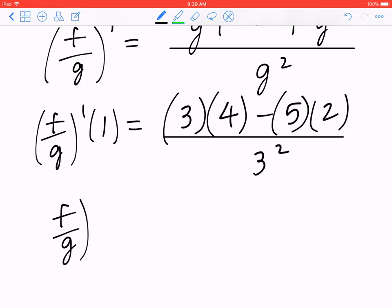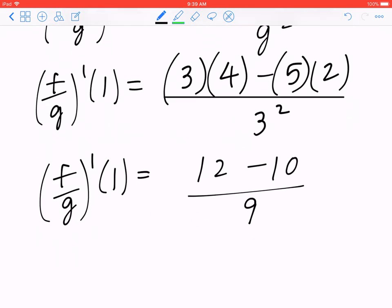(f/g)'(1) equals 3 times 4 is 12, minus 5 times 2, that's going to be 10, divided by 3 squared, that's going to give you 9.